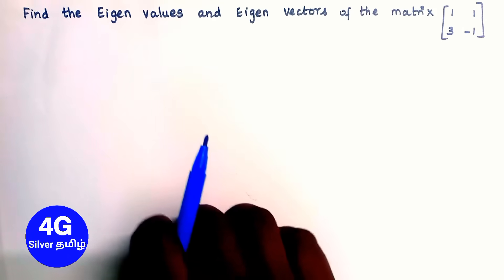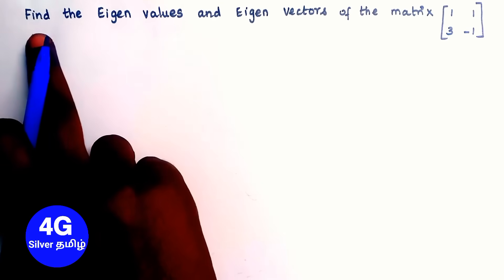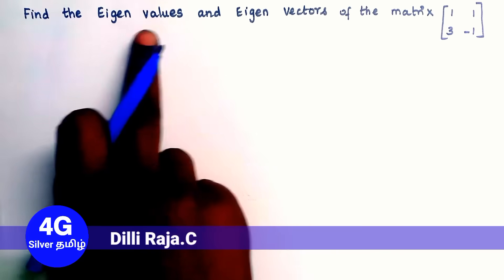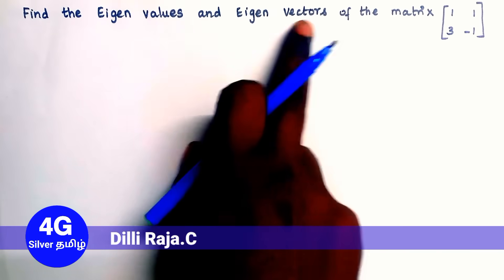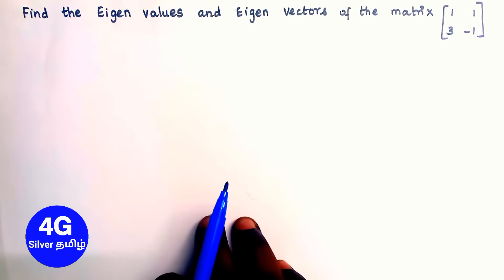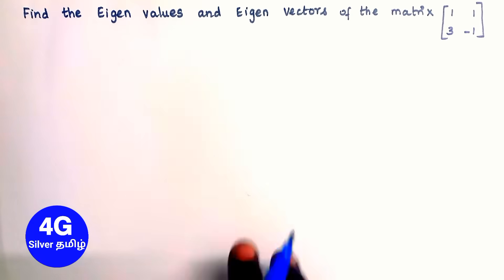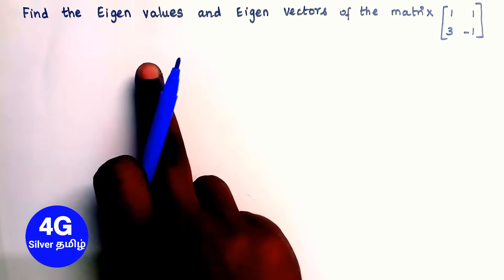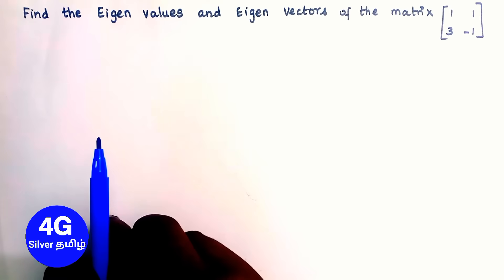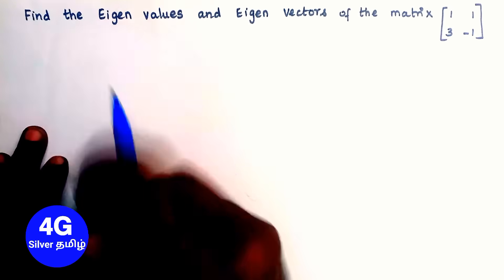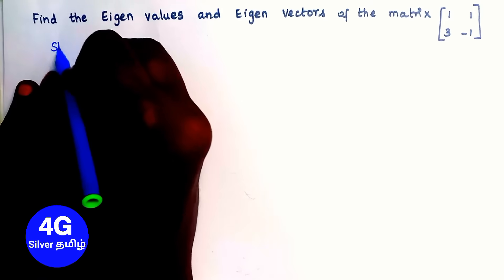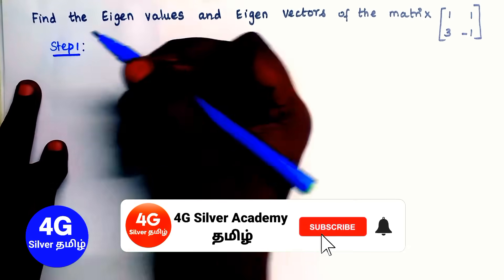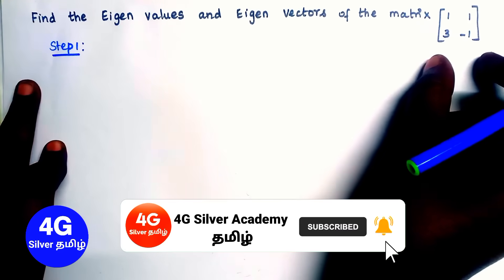In this video we will find the eigenvalues and eigenvectors of a 2x2 matrix. In the previous episode we used a 3x3 matrix to find eigenvalues and eigenvectors. Now we are using a 2x2 matrix to find eigenvalues and eigenvectors.